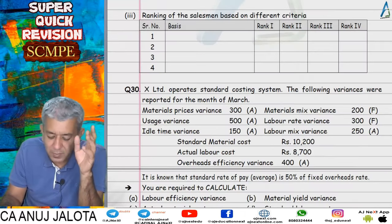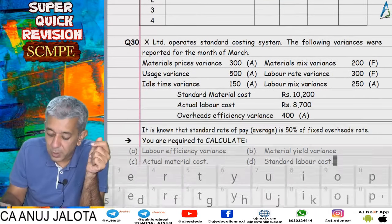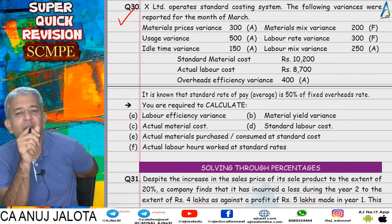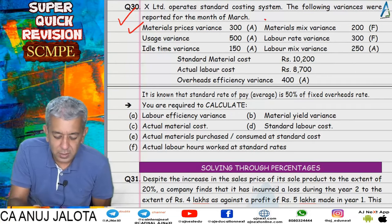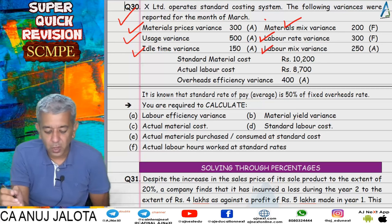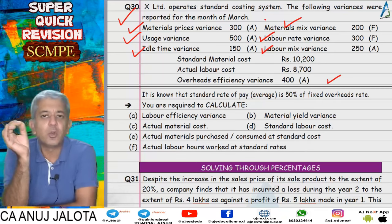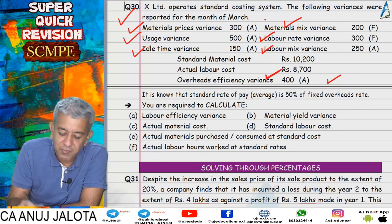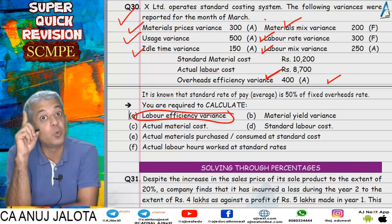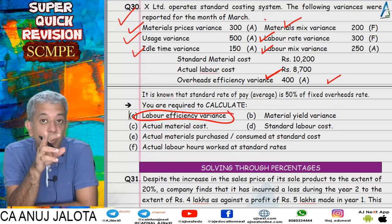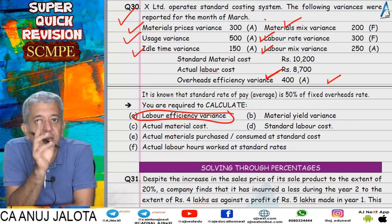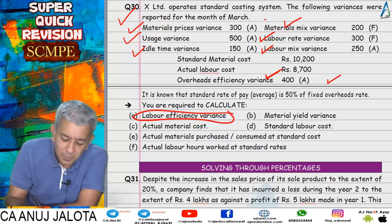This important question can come for any number of marks. Moving to question 30 — a one-star question included to show how efficiency variances are related. We had material price variance, usage variance, material mix variance, labor variances, and overhead efficiency variance. We tried to put everything in a tree diagram to show which variances contain what sub-variances.